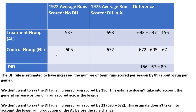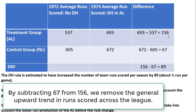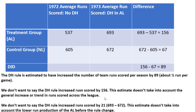The control group saw a general increase in runs scored, so we shouldn't attribute all 156 runs simply to the DH. On the other hand, we don't want to say the DH rule increased runs scored by just 21 — that's 693 minus 672 — because that estimate doesn't account for the much lower run production of the American League versus the National League before the rule change. So the difference-in-differences estimate of the effect of the DH rule on runs scored is 89.